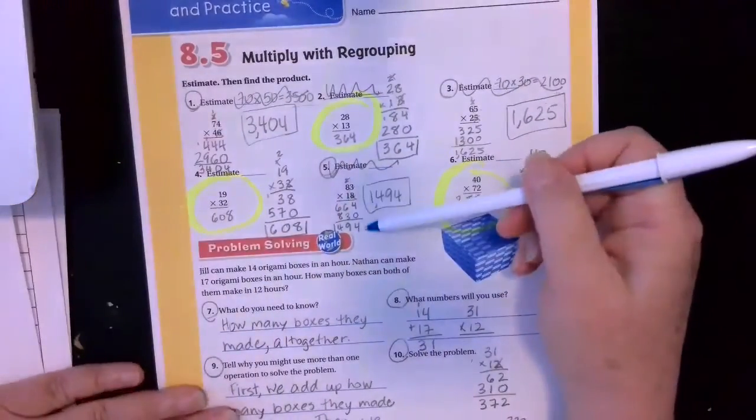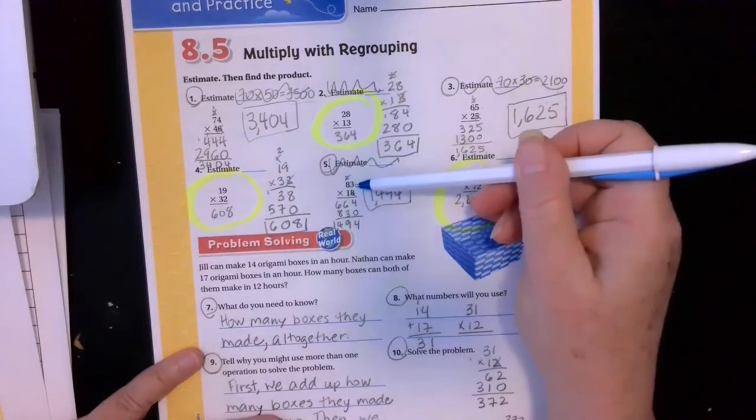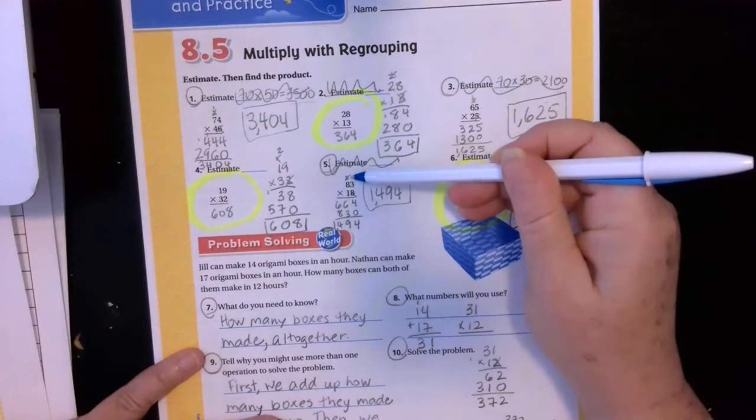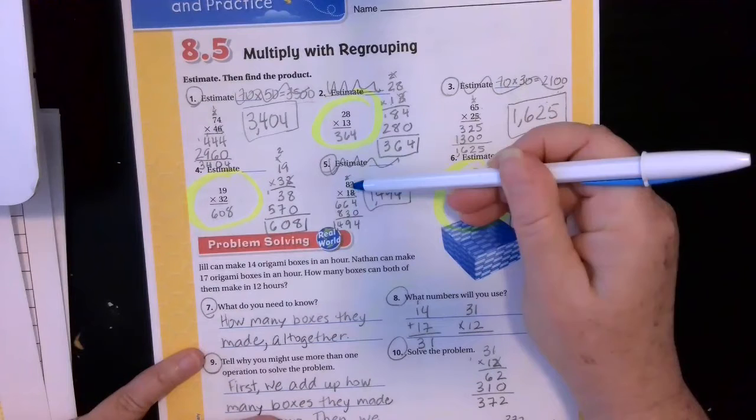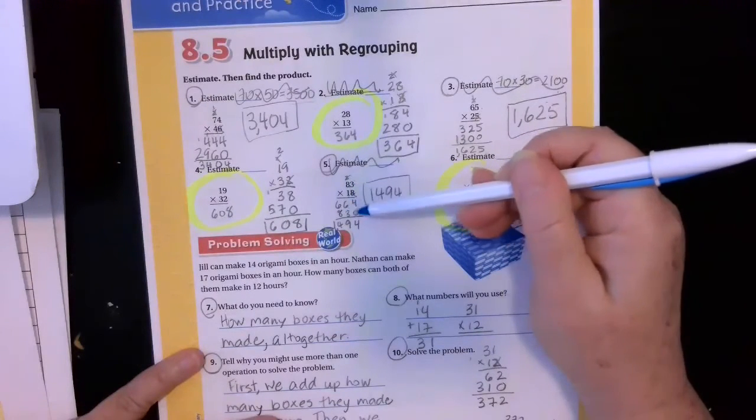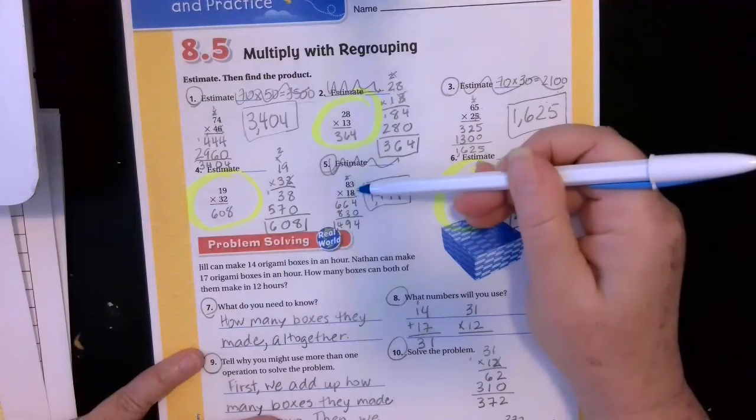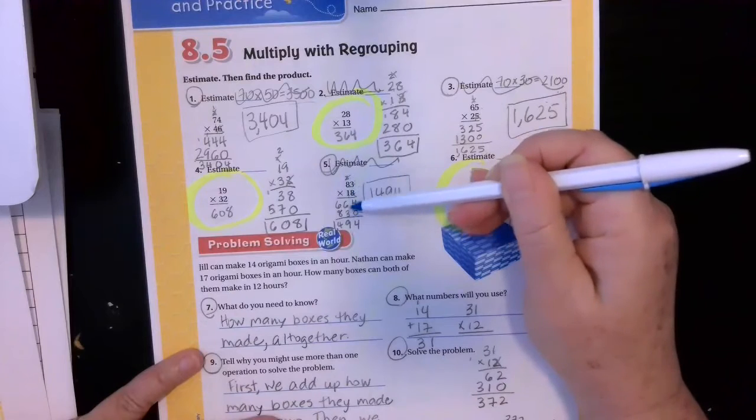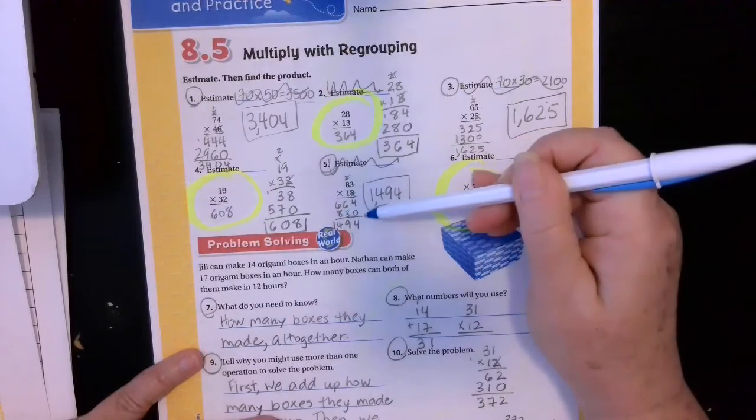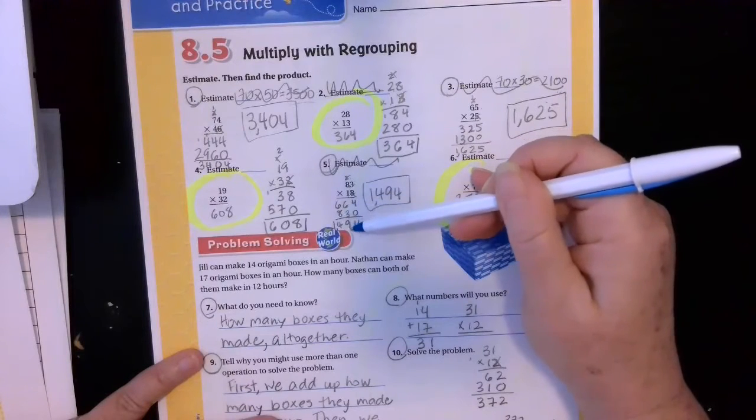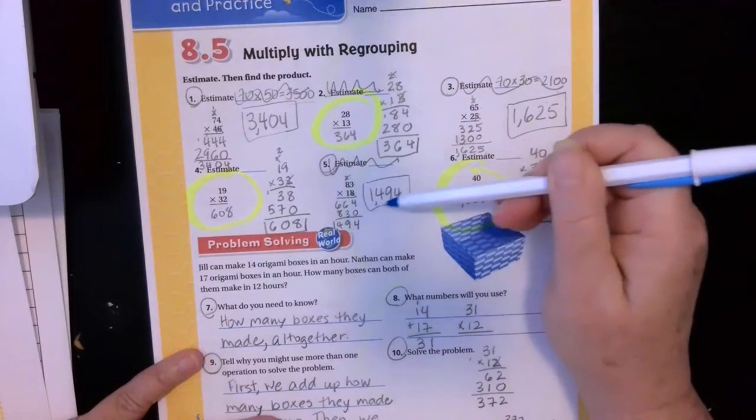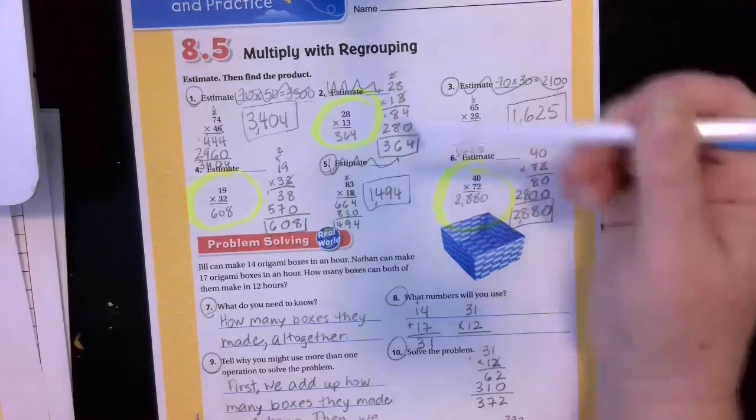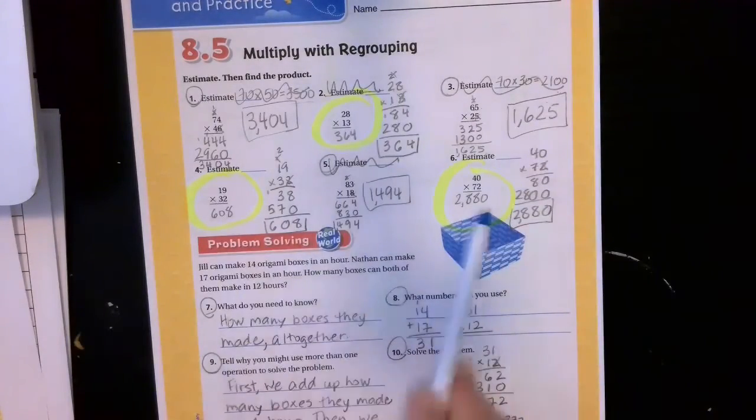So number 5, I was squishy. So this was 83 times 18. 8 times 3 is 24. Put down my 4, carry my 2. 8 times 8 is 64. Plus 2 is 66. Multiply by 10. So I put down my 0. Cross out everything that has to do with the 1s place and multiply by the 10s place. 1 times 3 is 3. 1 times 8 is 8. Add them up. 4 plus 0 is 4. 6 plus 3 is 9. 6 plus 8 is 14. So my answer was 1,494. And that was all I did up at the top. You guys were supposed to do 2, 4, and 6 for homework.